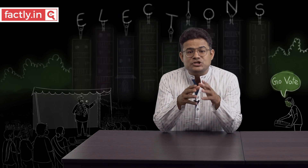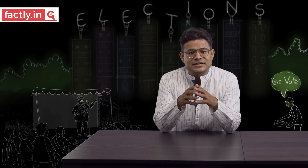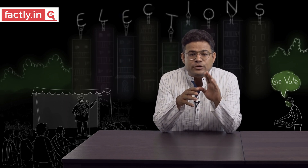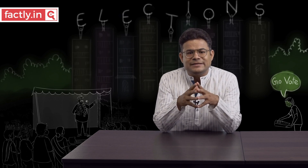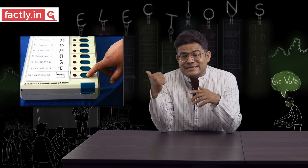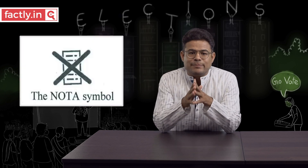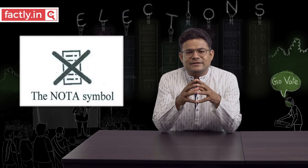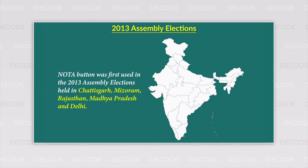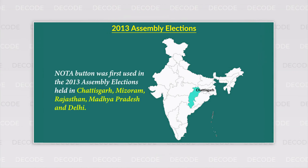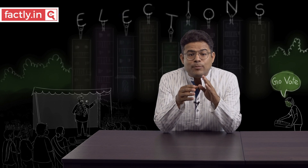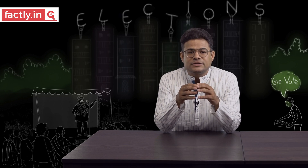The NOTA option was introduced in the 2013 Assembly elections. Initially it had no symbol; it was later recognized with its current symbol in 2015. The first use of the NOTA button was in the 2013 Assembly elections in Chhattisgarh, Mizoram, Rajasthan, Madhya Pradesh, and Delhi. NOTA polled an average of 1.85% of votes, with the highest being 3.06% in Chhattisgarh.